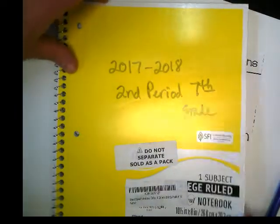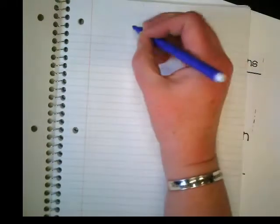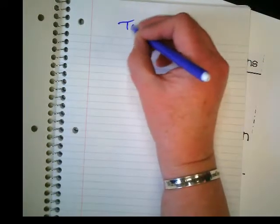Okay, so to start in our spiral, we're going to open it, and on the very first page, we're going to label Table of Contents.